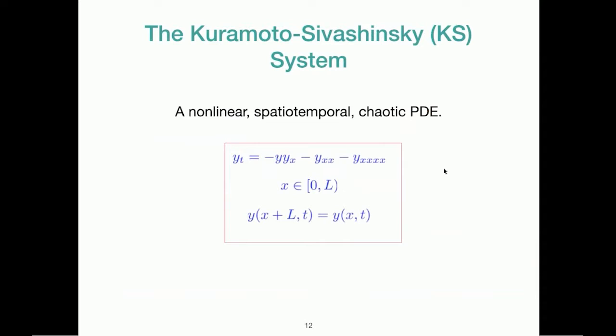And we are going to be looking at this Kuramoto-Sivashinsky system which is a non-linear spatial temporal chaotic partial differential equation. We will be using this system to illustrate our results. This system describes a one-dimensional field y of x comma t which evolves according to this partial differential equation in the domain 0 to L with periodic boundary conditions.